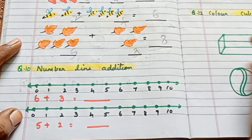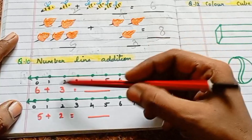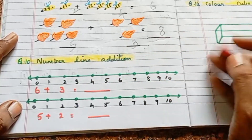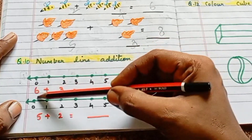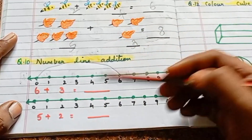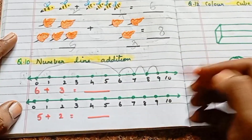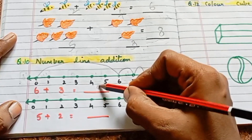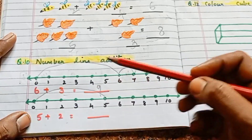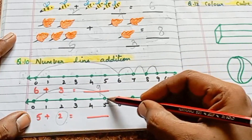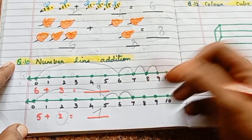Next: number line addition. Here is picture addition, and here is number line addition. 6 plus 3 — on the number line, 6 plus 3 is 9. Next: 5 plus 2 — start at 5, jump 2 spaces on the number line — 5 plus 2 is 7. This is how number line addition works.